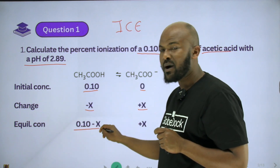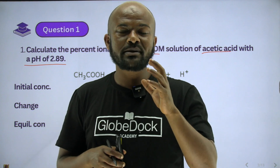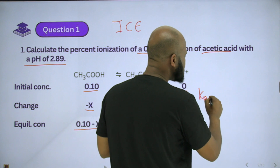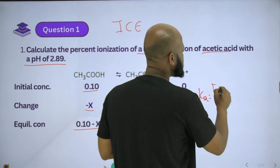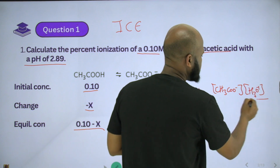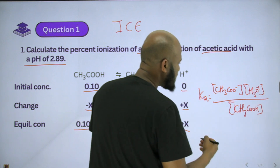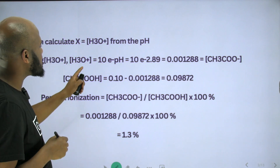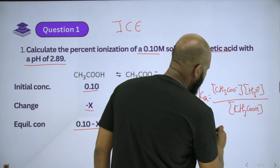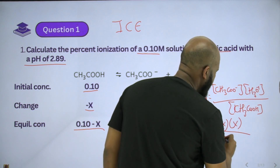The equilibrium concentration: 0.1 minus x, and 0.0 plus x. So at equilibrium concentration, Ka is equals to the concentration of the acetate ion times the concentration of the hydronium ion divided by the concentration of the acetic acid.